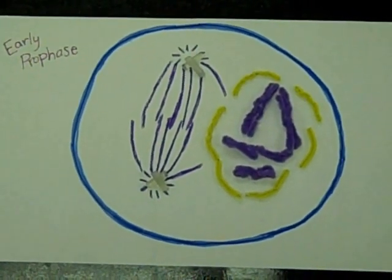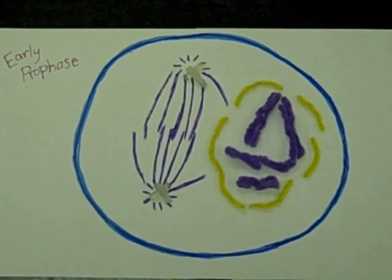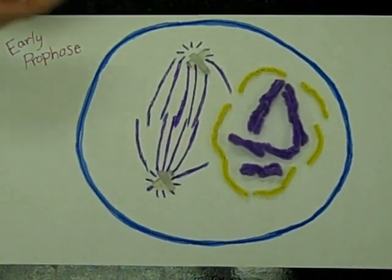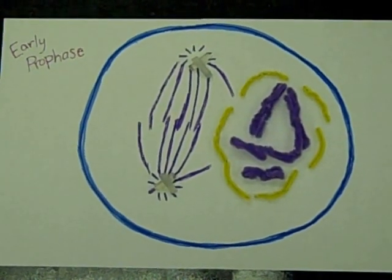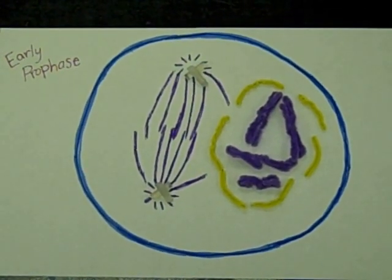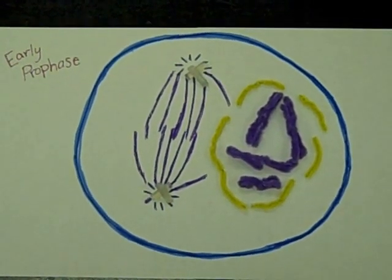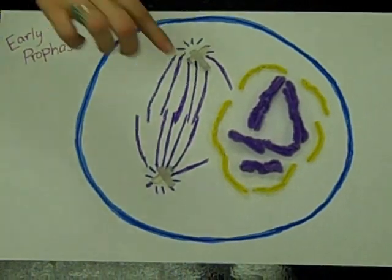The first stage of mitosis is prophase, which can be divided into two parts, early and late. In early prophase, my chromatin fibers coil up, becoming the beginnings of chromosomes.